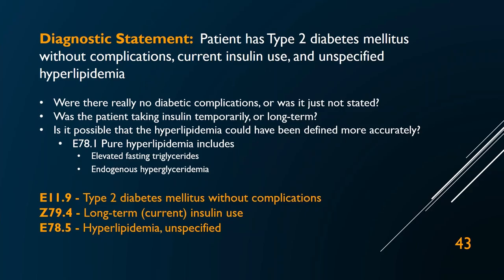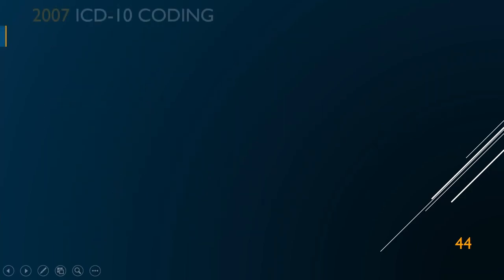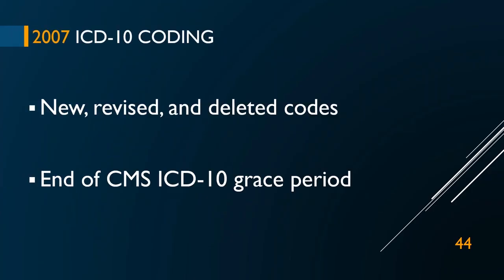So when it comes to the 2017 ICD-10 coding changes in a week and a half, you need to figure out which new, revised, and deleted codes apply to you. And with the end of this grace period where we could use unspecified codes without scrutiny, we need to step up our game — figure out what the codes offer and what details are really there, provide the right information, survive audits, and make sure what happened to the patient is documented properly, which matches the claim properly, which means it can get processed by the payer properly. That's my take home message: live happily ever after.